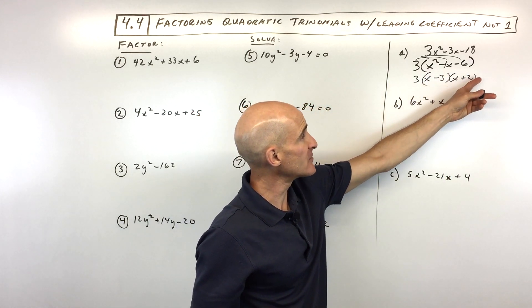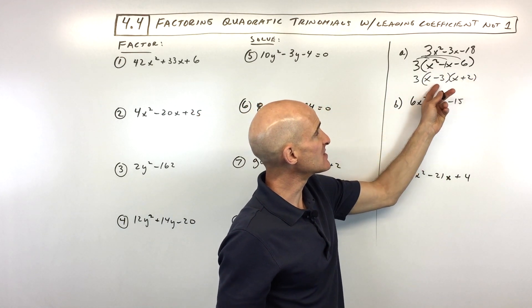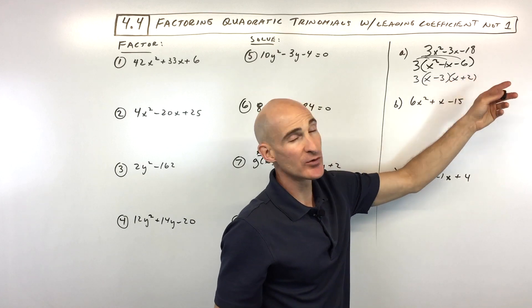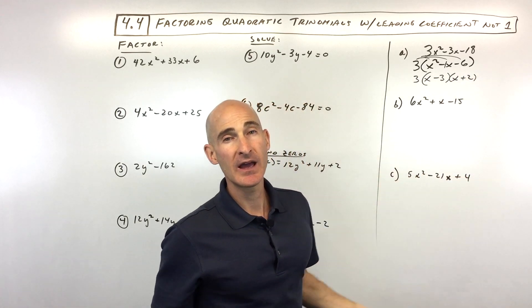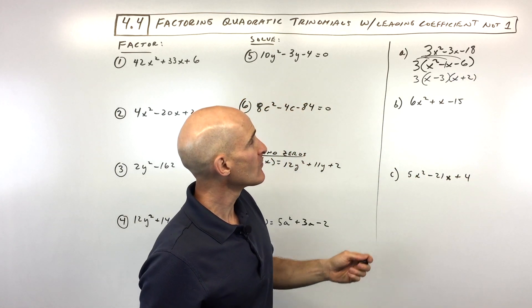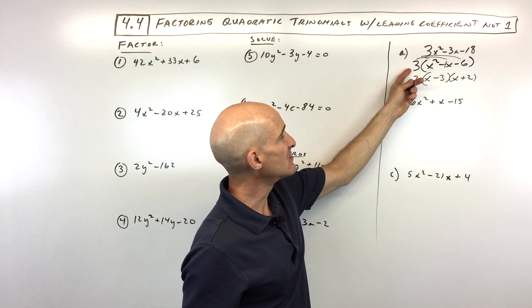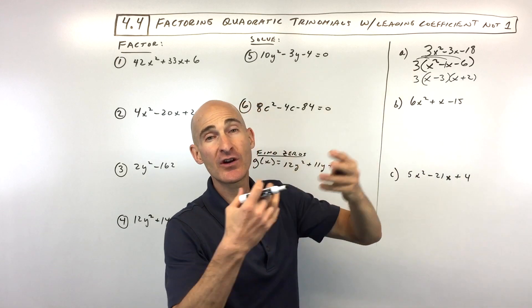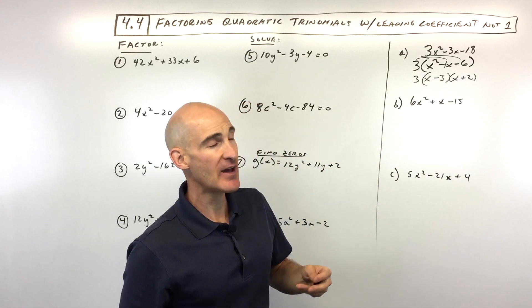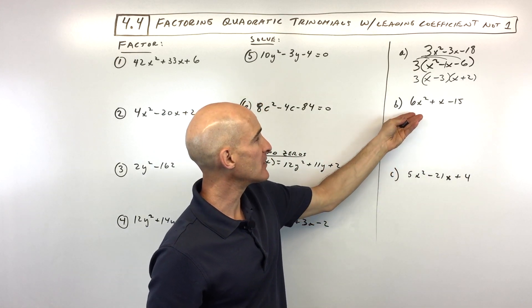Now if we were solving — if this was equal to zero — we would set each group equal to zero and solve. But again, the first key is to see if you can factor out that greatest common factor, the GCF.